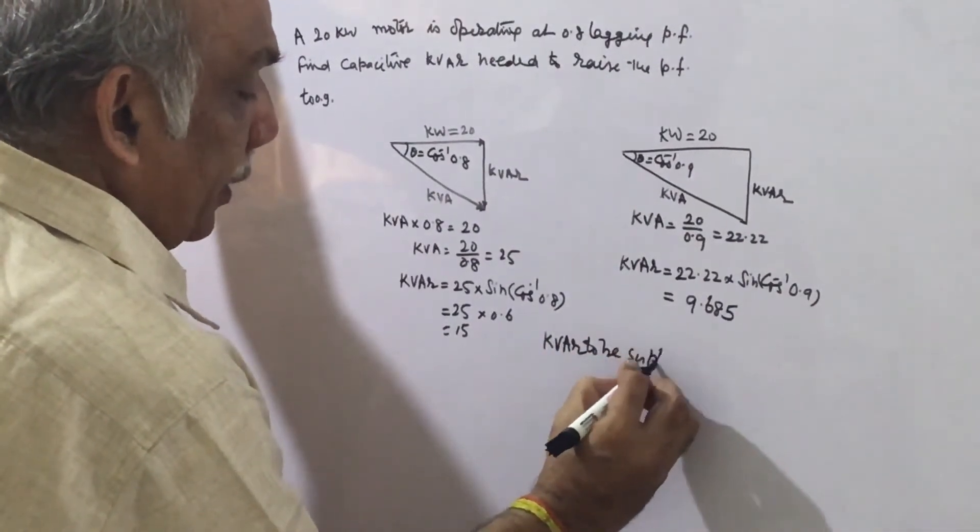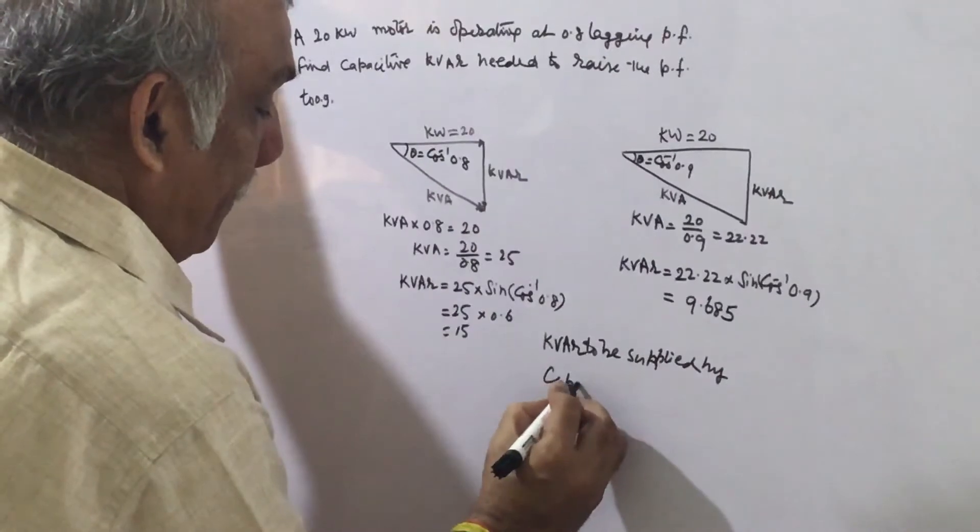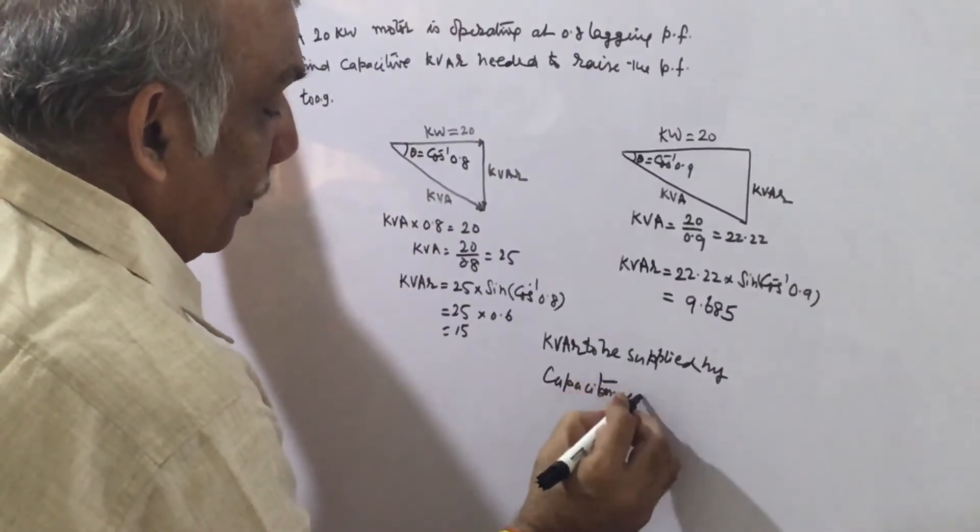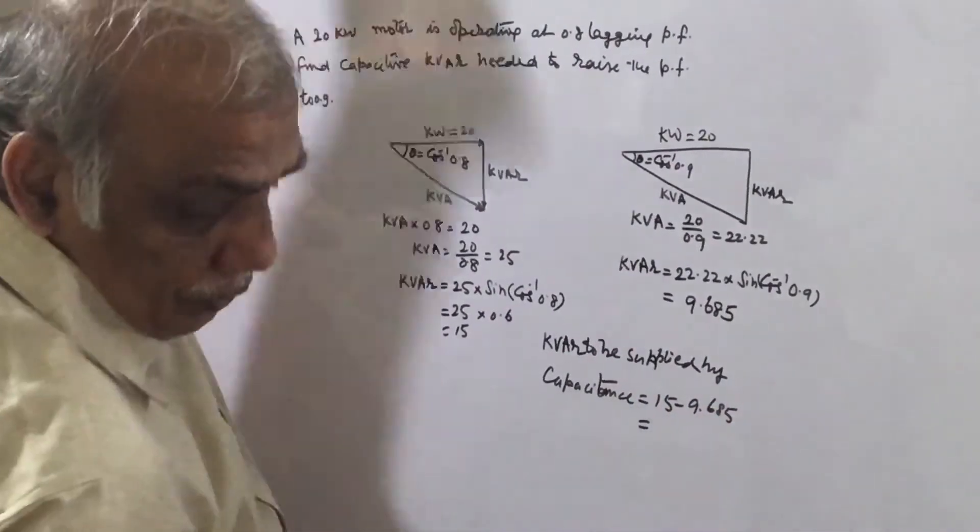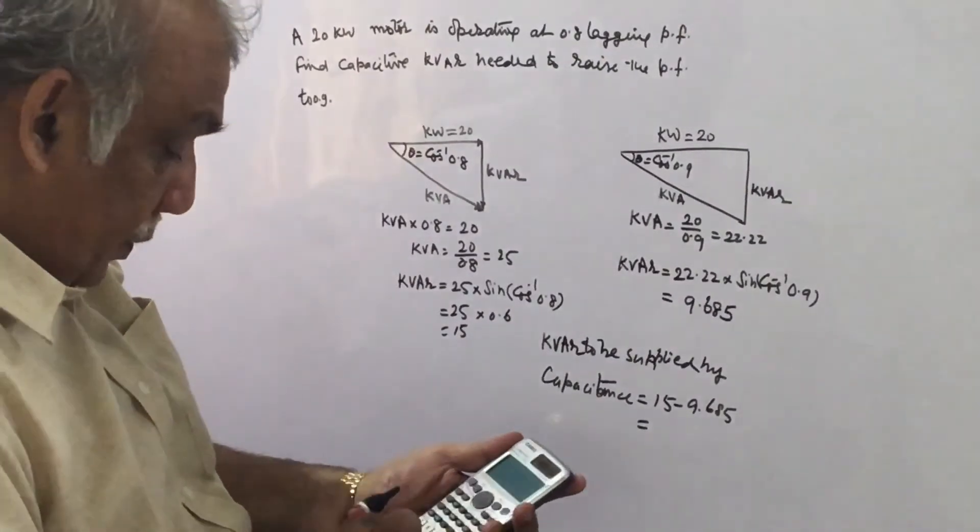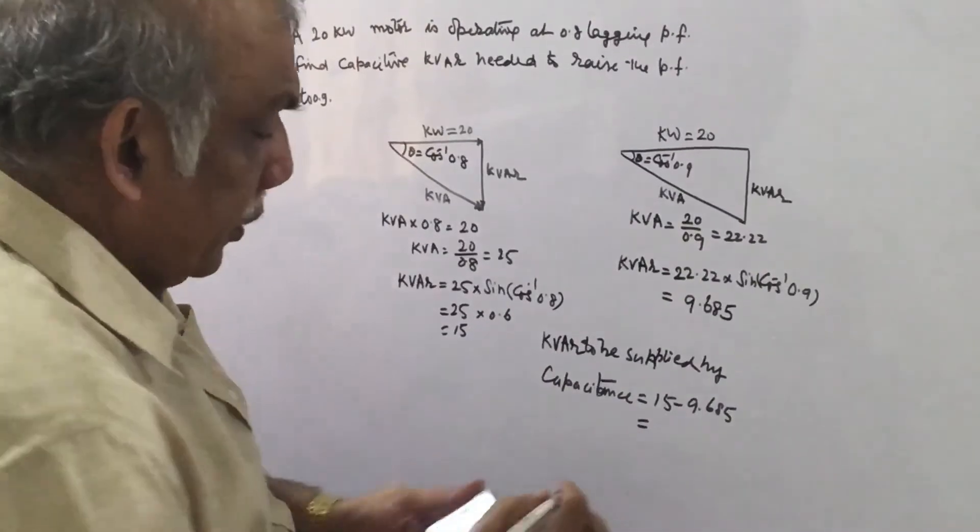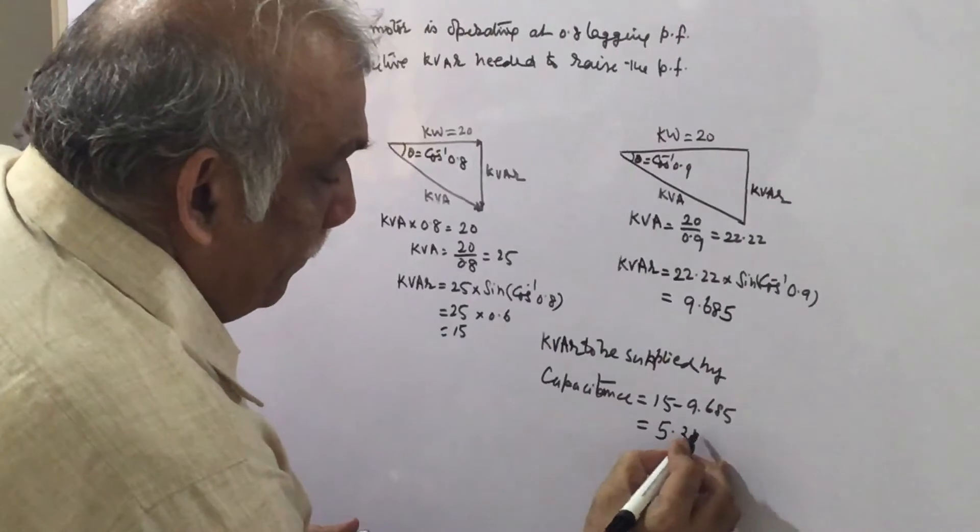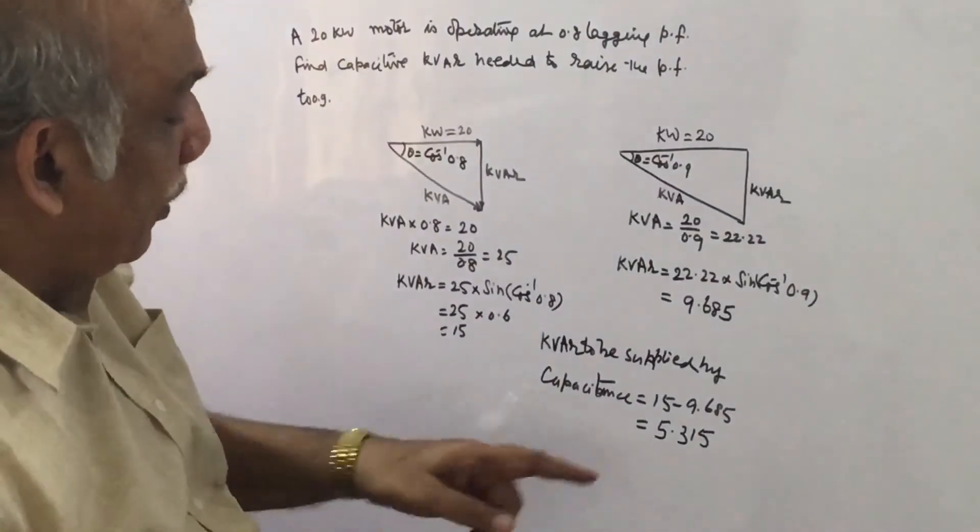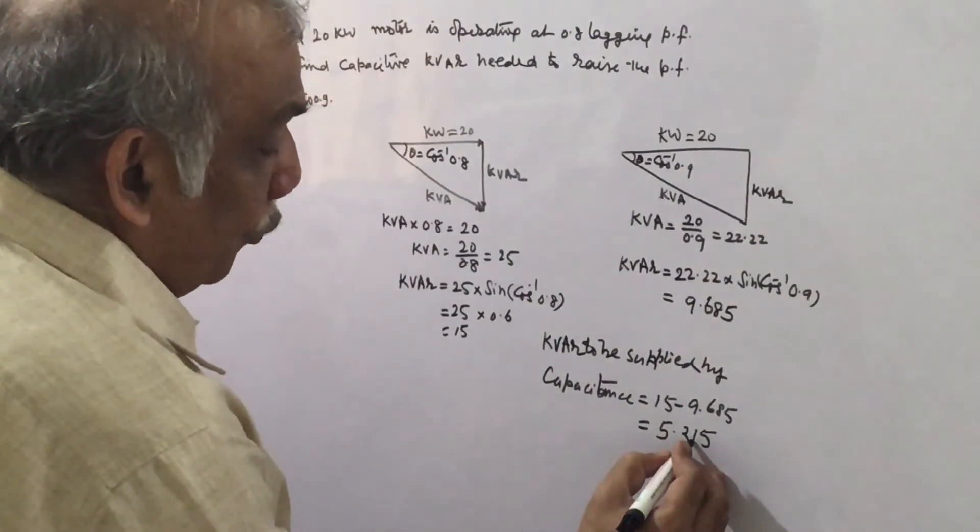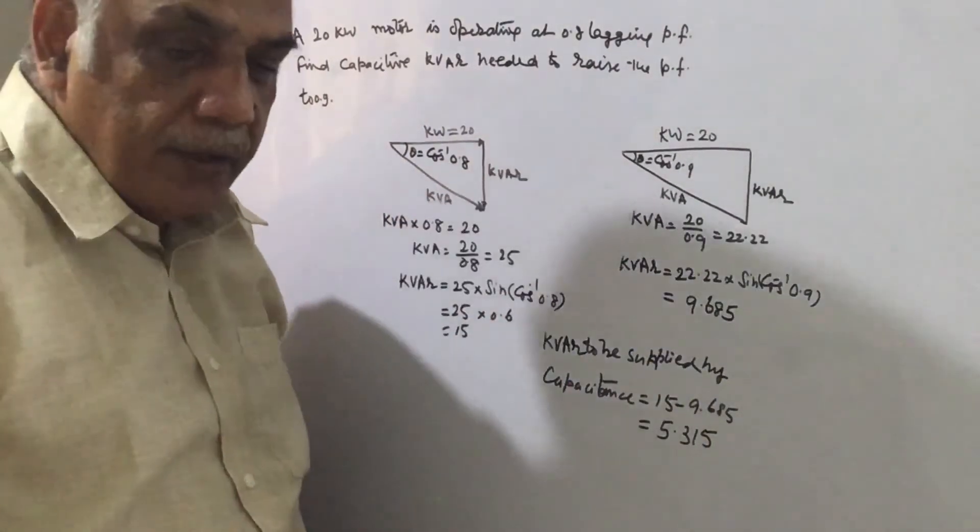So the kVAR to be supplied by the capacitance will be the difference of these two: 15 minus 9.685, which becomes 5.315.